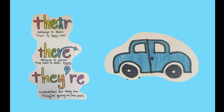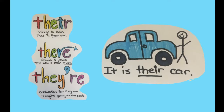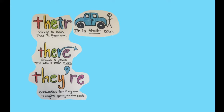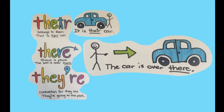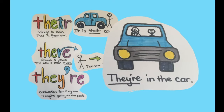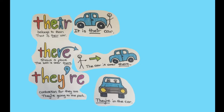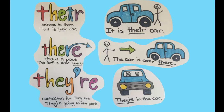Now that we know our there, there, and there, we're going to figure out how to use them. So here's a little car. If I said the sentence 'it is their car,' which 'there' would it be? It would be T-H-E-I-R — their car, because it belongs to them. And what about 'the car is over there'? T-H-E-R-E, because it's showing the place. And 'they're in the car'? T-H-E-Y-R-E, because it's the contraction for 'they are in the car.' So even though all these sentences are talking about cars, you can see there's a sentence for belonging, place, and a contraction.